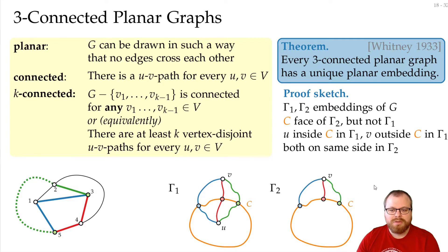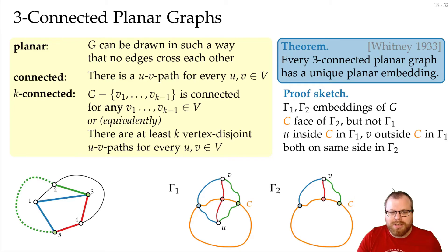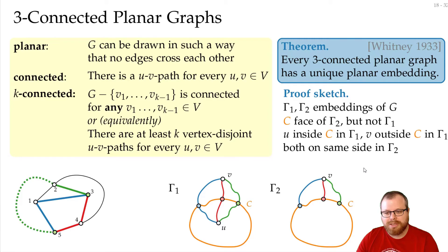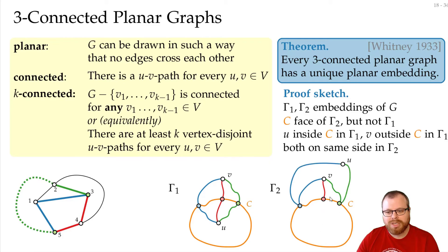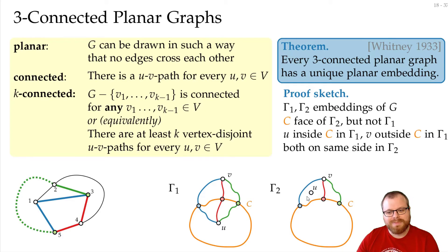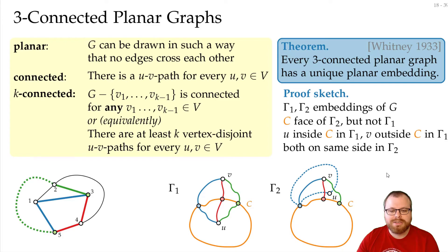Let's say u and v are on the outside. We first draw v somewhere out there with some path on the outside. But where can we place u? There are basically three possibilities: either on the outer face, or inside one part, or inside another part. If we put it on the outer face, connecting the green and blue paths is fine, but there is no way to connect the red vertex without crossing the green or blue path. The same happens in the other two cases — each placement forces a crossing. So there is no place where we can put vertex u while maintaining a planar embedding.